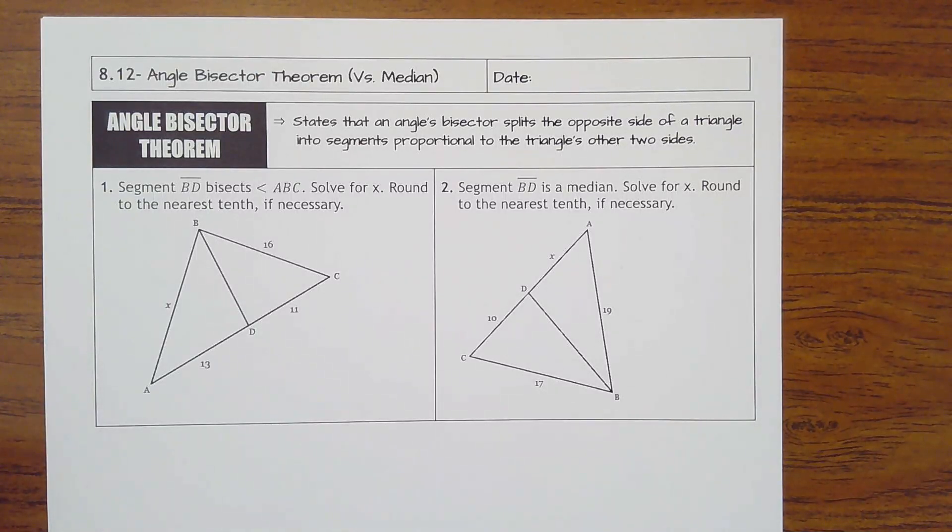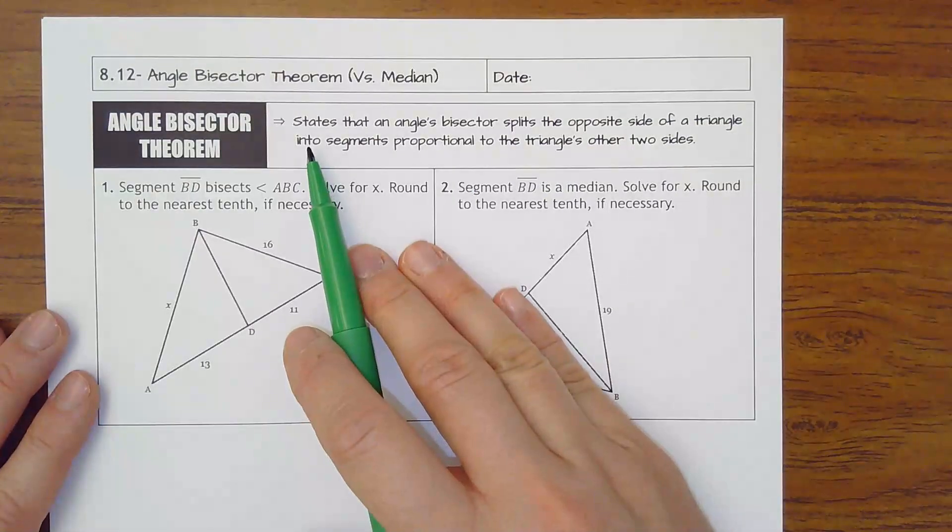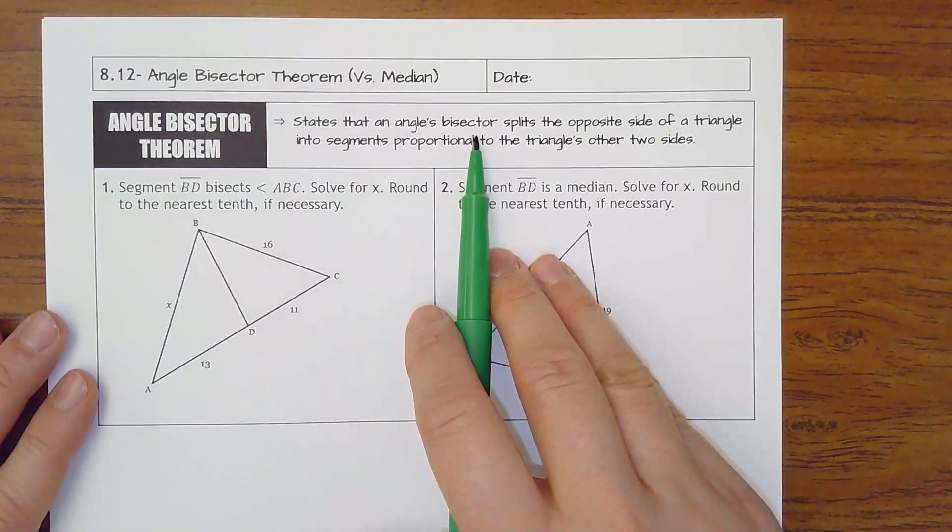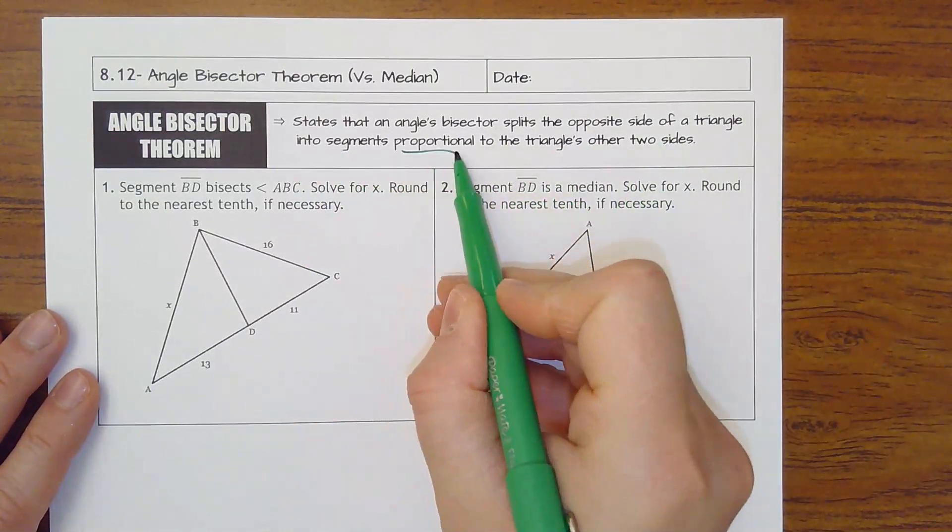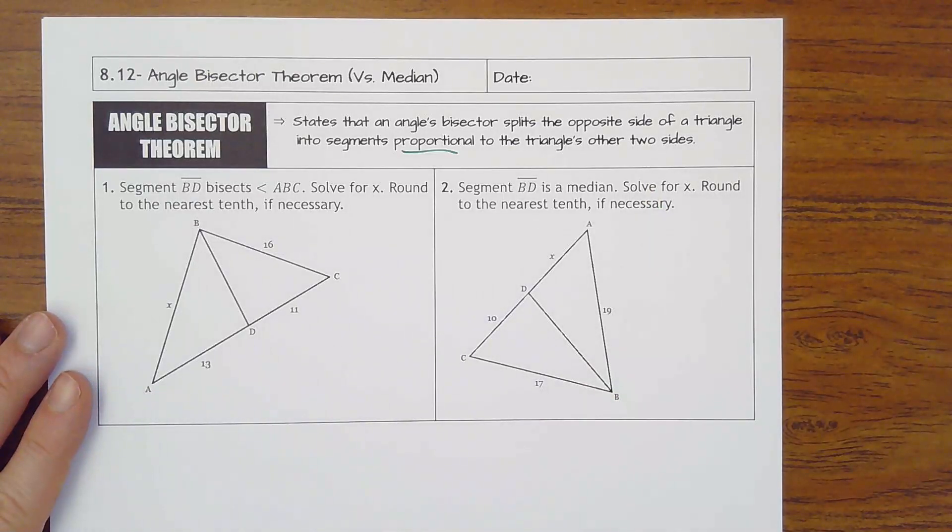8.12 angle bisector theorem versus a median. This angle bisector theorem is similar to what we just did on the last lesson with the side splitter theorem. What it does is it states that an angle's bisector splits the opposite side of a triangle into segments proportional to the triangle's other two sides.